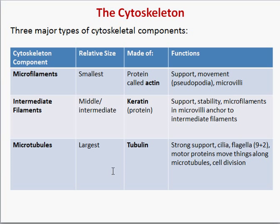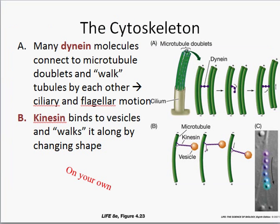Microtubules are the largest cytoskeleton components. They're made out of a protein called tubulin — easy to remember. They provide very strong support and a network inside the cell for things to move around on. They're also related to the formation of cilia and flagella — reference your notes to look at specifically how microtubules form them. They're also related to motor proteins that move things along these microtubules, so these tubules form essentially a highway inside the cell, and motor proteins can take vesicles and move them along.